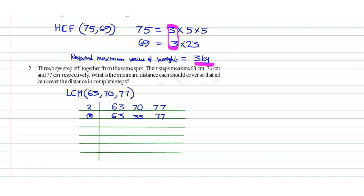Now we divide by 3. Here it is 21. Here it is not divisible by 3, so it is 35. Not divisible by 3, 77.